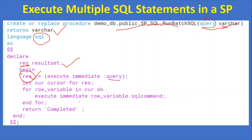We use a FOR loop: FOR row_variable IN cur — where cur is the cursor variable — DO EXECUTE IMMEDIATE row_variable.sql_command. Inside the result set, whatever query you pass as input, the alias name must be sql_command. If you use any other alias name, executing this procedure will throw an error.